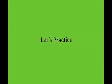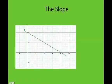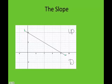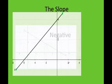Let's go ahead and practice. Here — is my slope positive or negative? Remember, upstairs is here and downstairs is here. Is my slope going upstairs or downstairs? Since she's going downstairs, she's going to be negative.